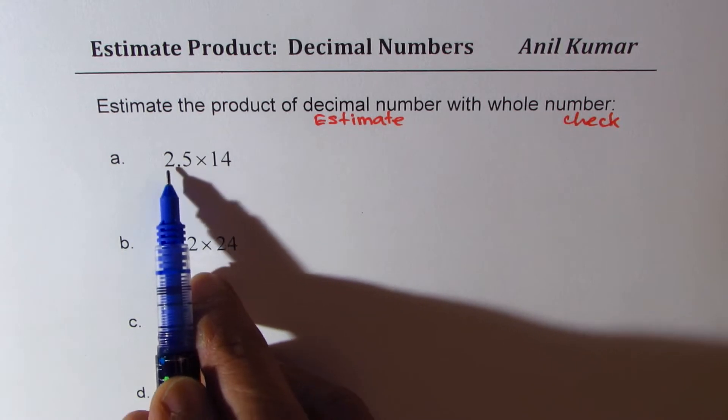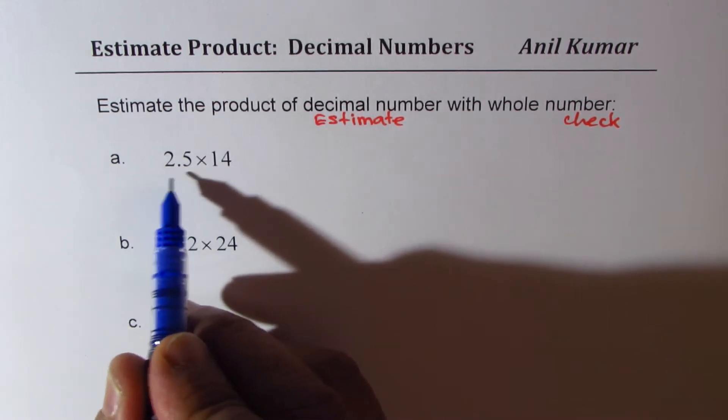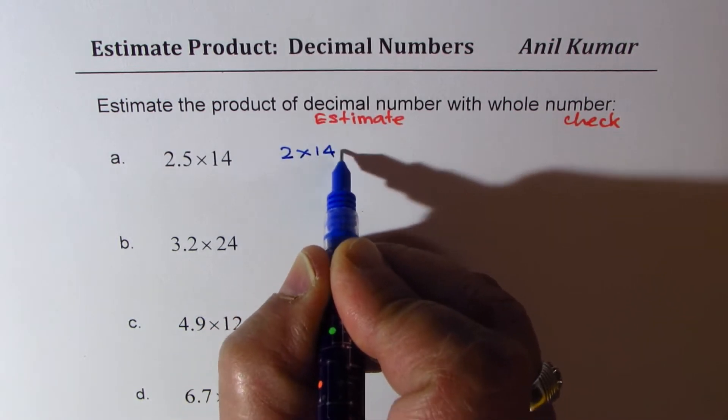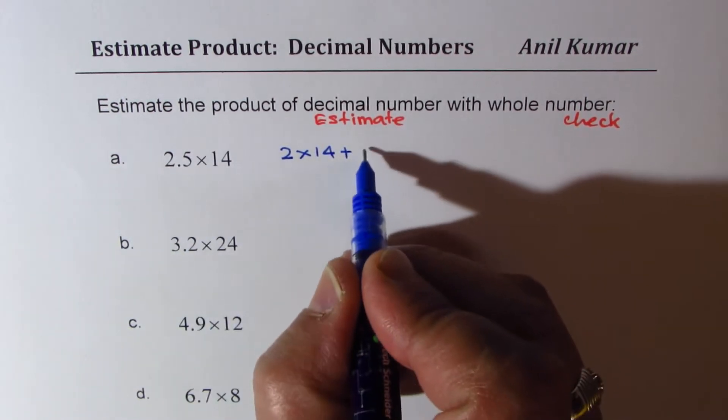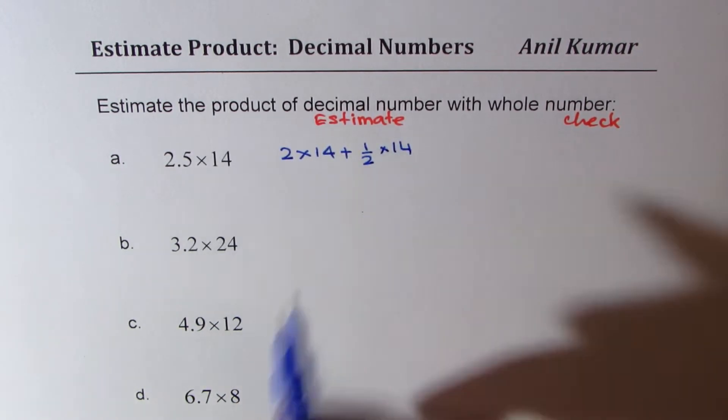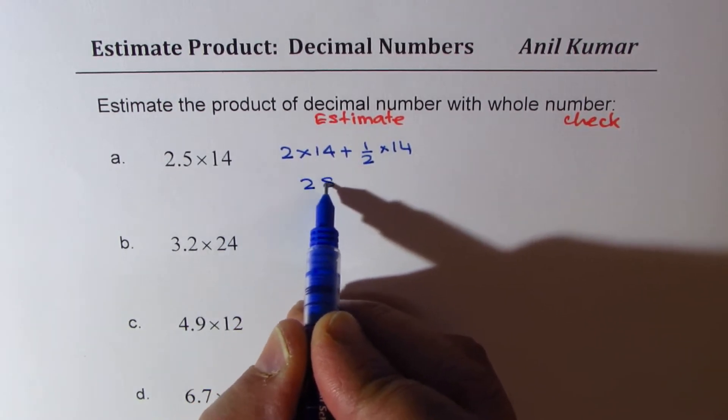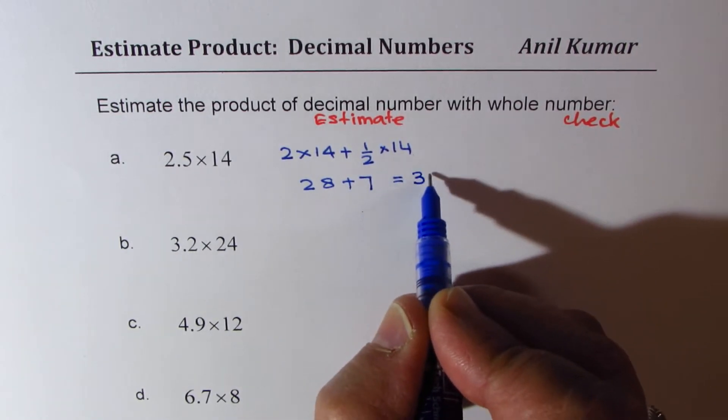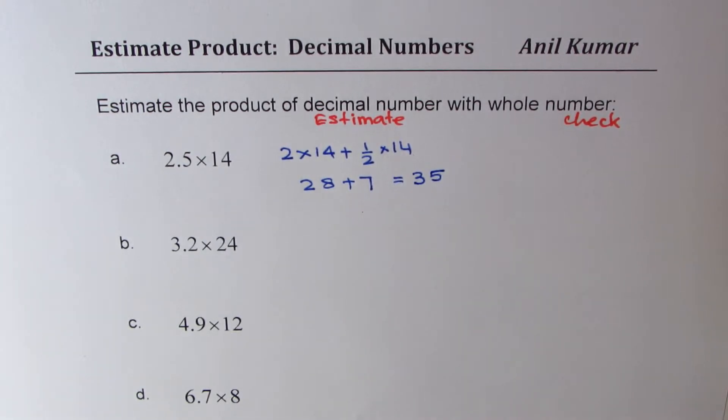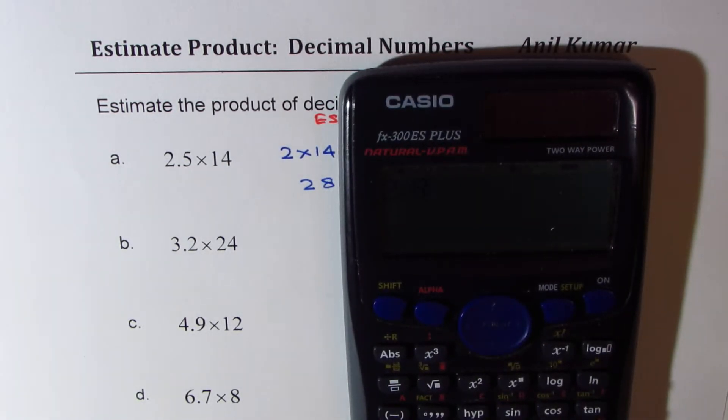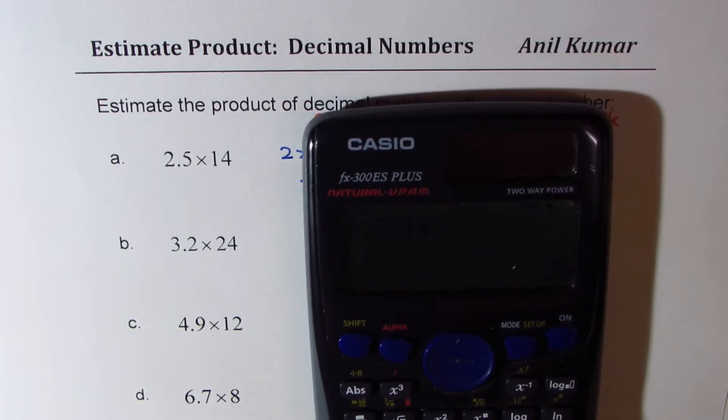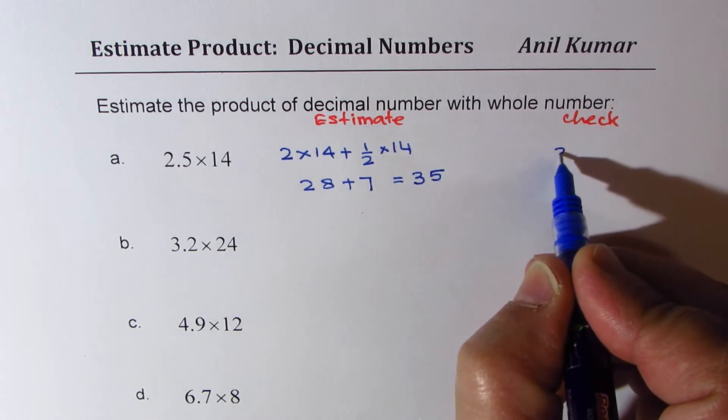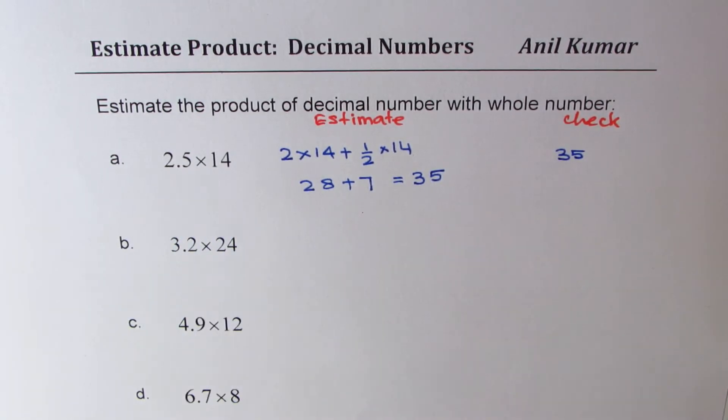Now the first one here is 2.5 times 14. So that really means we have to do 2 times 14 plus 0.5 is like half, plus half of 14. That is what it means. So 2 times 14 is 28 plus half of 14 is 7. And if you add them, what you get is 35. So 35 is our estimate. Now if you multiply, what do you get? 2.5 times 14 is equal to exactly 35. So we do get 35 here. Two and a half times, you can estimate perfectly as we've done here.